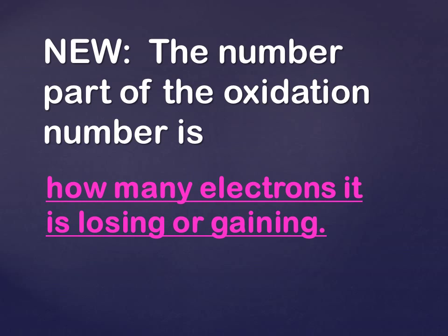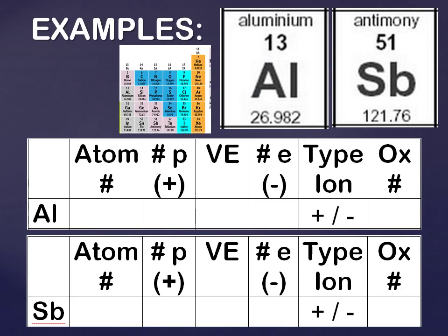Remember the example: if you have 5 protons and 5 electrons, your charge is 0. If you lose 1 electron, you're losing 1 negative charge, so your overall charge will be plus 1. But if you lost 2 electrons, your charge will be plus 2. If you gained 2 electrons, then it would be minus 2.